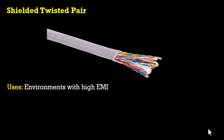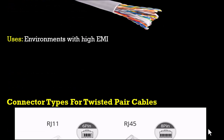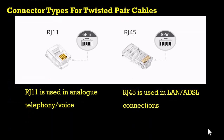Now, we're going to look at the various connectors that are used for the twisted pair cables. We have two types of connectors which are the RJ11 and the RJ45. The RJ11 is used in analog for voice and telephone, while the RJ45 is used in LAN and ADSL connections.